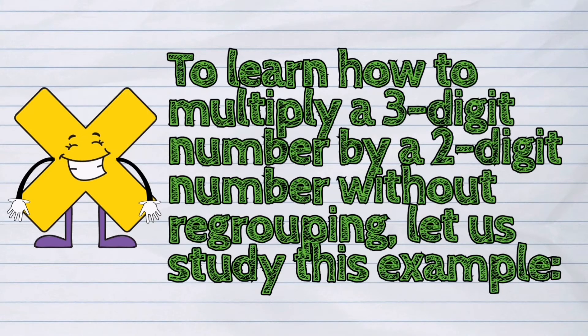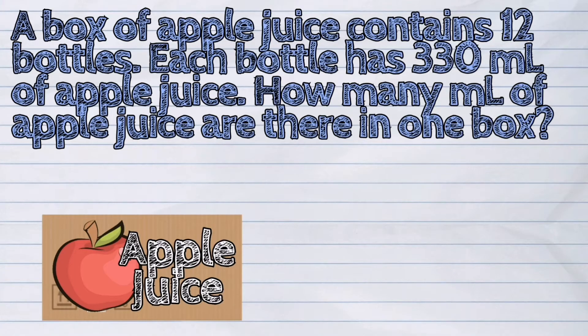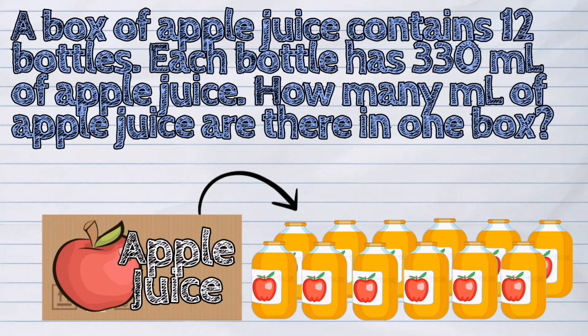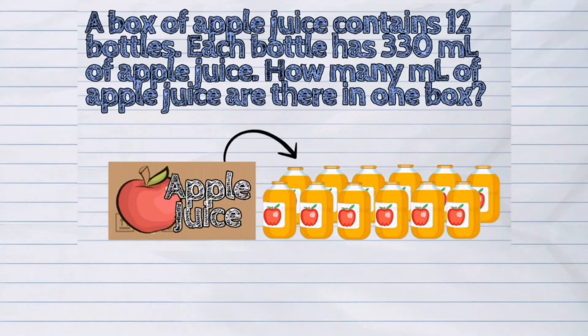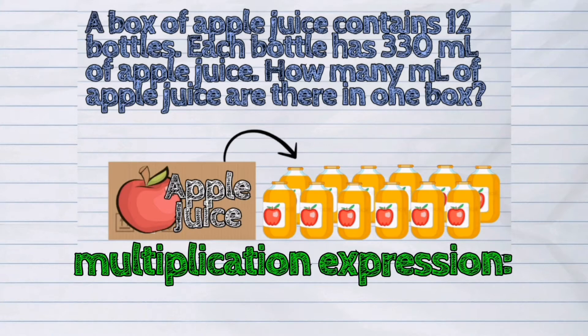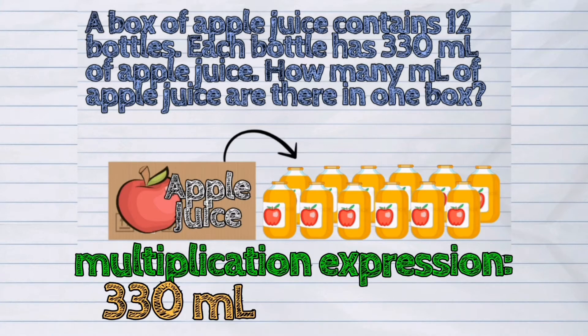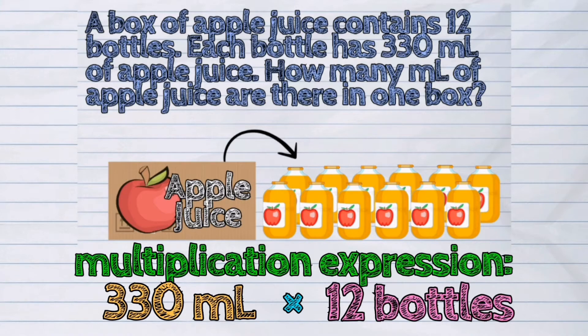To learn how to multiply a 3-digit number by a 2-digit number without regrouping, let us study this example. A box of apple juice contains 12 bottles. Each bottle has 330 ml of apple juice. How many ml of apple juice are there in one box? So, the multiplication expression should be 330 ml times 12 bottles.